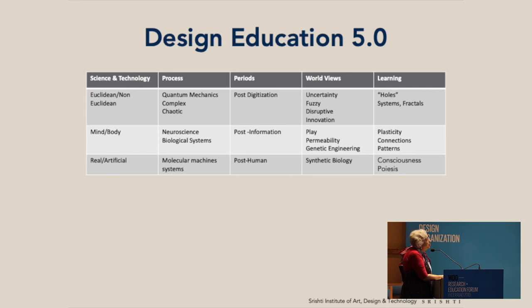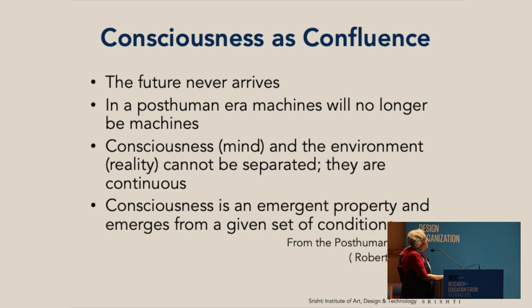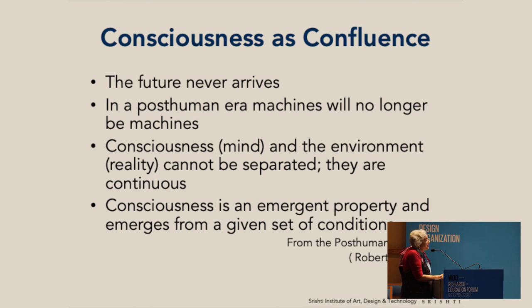In the time of 5.0, learning really is in a field of consciousness — because that's the post-human condition — and poesis, the Greek word for creativity. From the post-human manifesto: in a post-human era, machines will no longer be machines, says Robert Pepperell. Consciousness, which is the mind, and the environment, which is our lived reality, cannot be separated. It doesn't matter if you're bioengineered, if you have a prosthesis, or if part of your valve is from somewhere else — they are still part of your body. Your mind cannot be replaced by the physicalness of an artificial device. Consciousness is an emergent property — it emerges from given sets of conditions. The challenge in learning, and in our education, is that we have to define those given sets of conditions for consciousness to emerge.